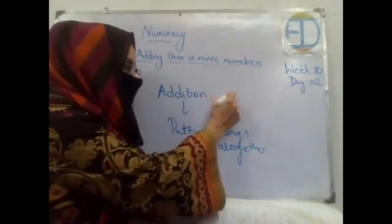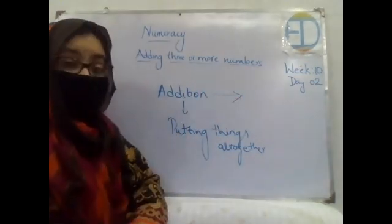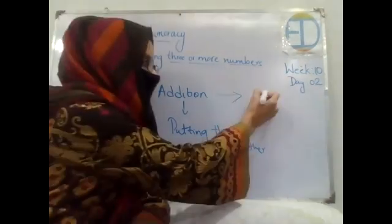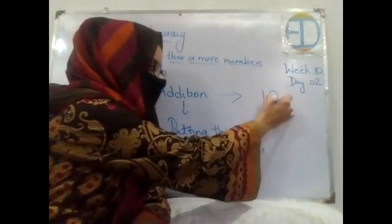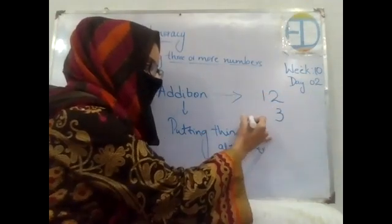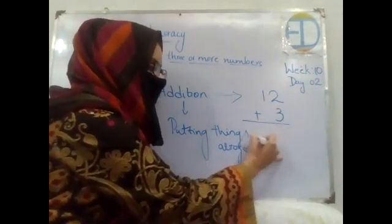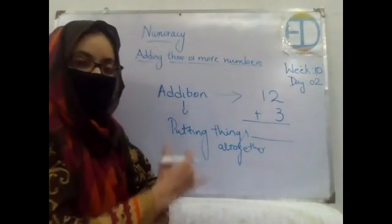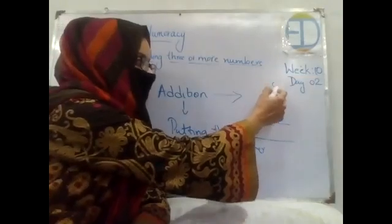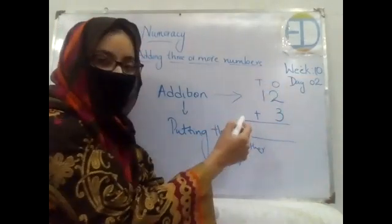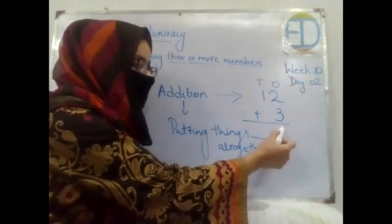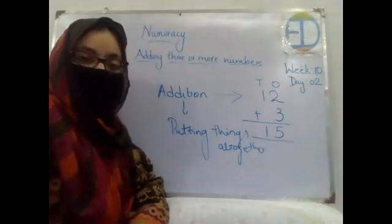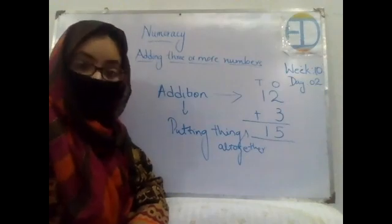So now we practiced one-digit and two-digit addition. So tell me, if there are two numbers that are 12 plus 3, what would be the answer? You will always start from the right-hand side. First, you will write the value over it and then add: 3 plus 2 equals 5, and 1 as it is. So this means that 12 plus 3 equals 15.